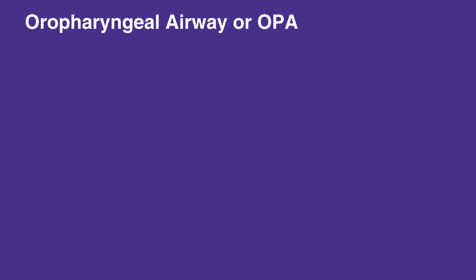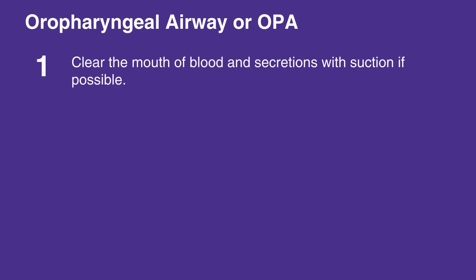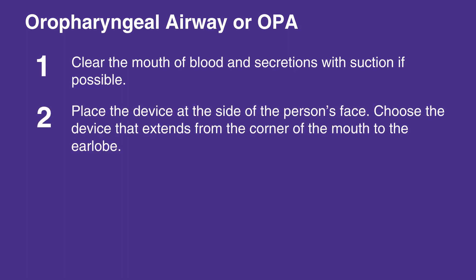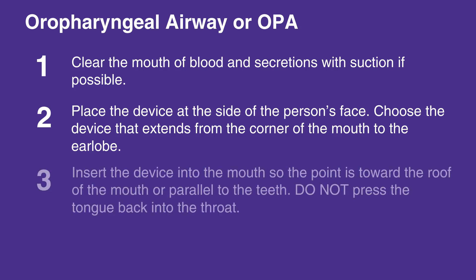To insert an oropharyngeal airway, or OPA, first clear the mouth of blood and secretions with suction if possible. Place the device at the side of the individual's face. Make sure to choose a device that extends from the corner of the mouth to the earlobe. Insert the device into the mouth so the point is toward the roof of the mouth and parallel to the teeth.